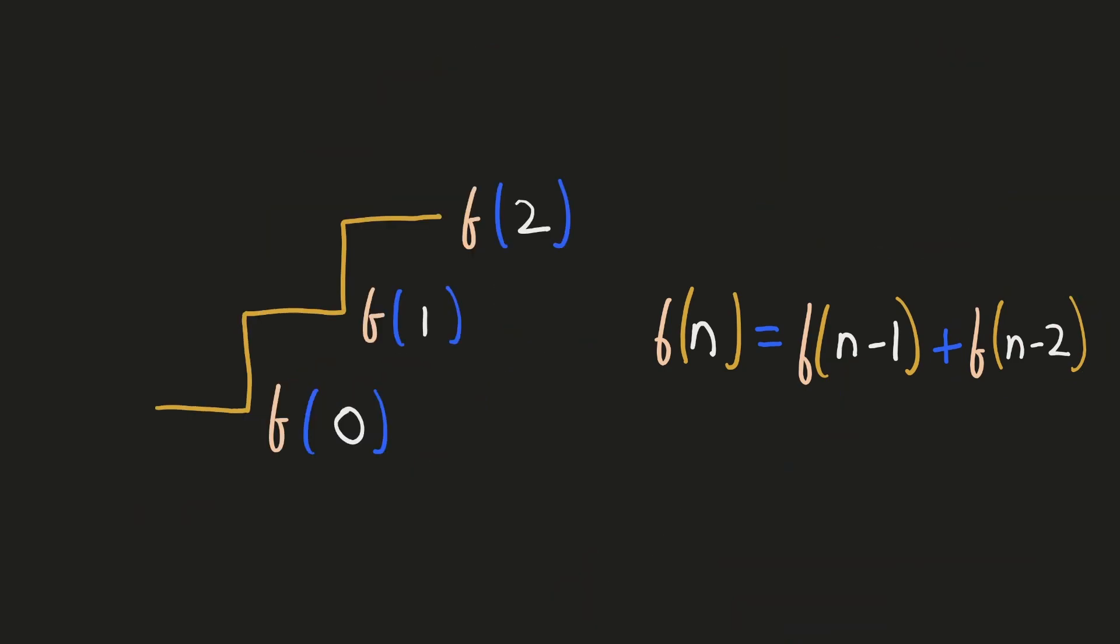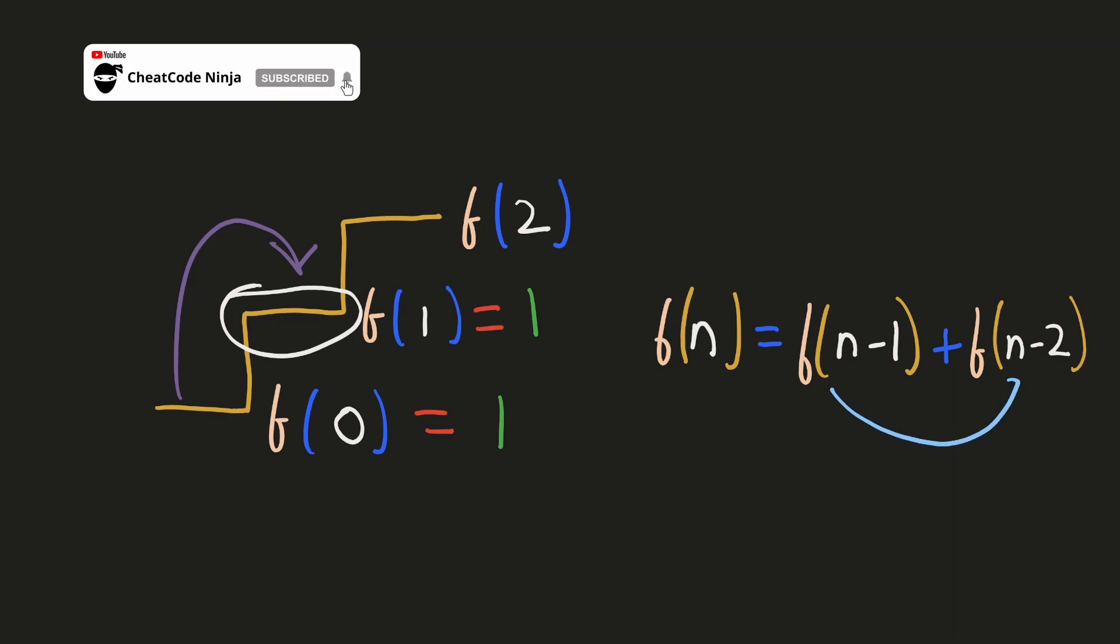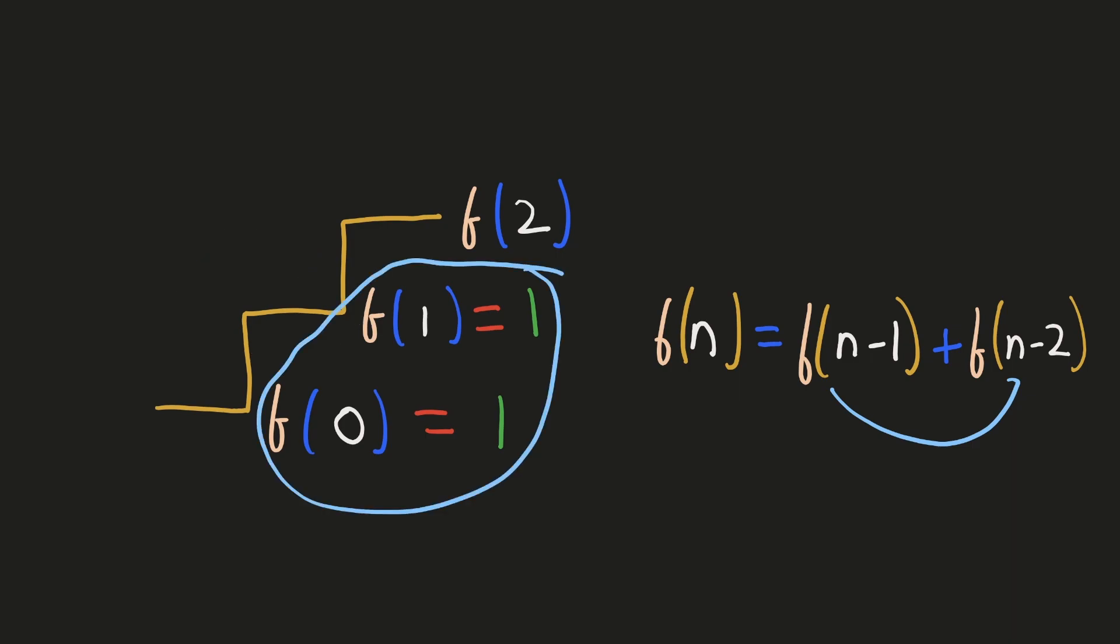Now, let's try to find the base condition of our recursive function using this small example. If we just look at position 0, we see that there is only one way to reach it by not taking any step at all. If we just consider position 1, there is only one way to reach it by taking a single step from position 0. Since our recursive function depends on the results of two previous calls, these two base conditions should be sufficient to terminate our recursive function.